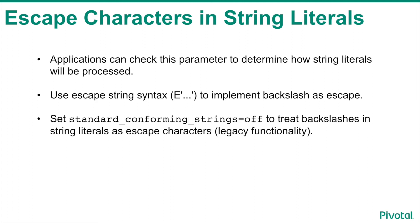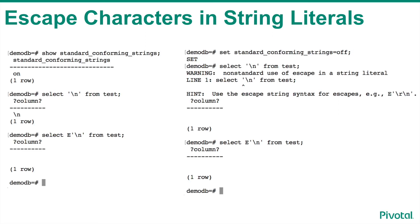For backward compatibility, it is possible to set the configuration parameter standard_conforming_strings to off, which will allow Greenplum to once again treat backslashes in string literals as escape characters. In the example on the left, with Greenplum 5, when a string that contains a backslash character is submitted for processing, by default it is processed as a literal backslash value. To use the backslash as an indicator of an escape string sequence, include the standard escape string syntax in the SQL statement as shown. In the example on the right, if the standard_conforming_strings parameter is set to off, Greenplum 5 will revert to legacy functionality, but will return a warning indicating a non-standard use of the backslash escape in a string literal.